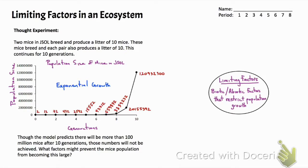Limiting factors are both living and non-living, or the biotic and abiotic factors, that may restrict the growth of a population. We can divide limiting factors into density-independent and density-dependent factors.